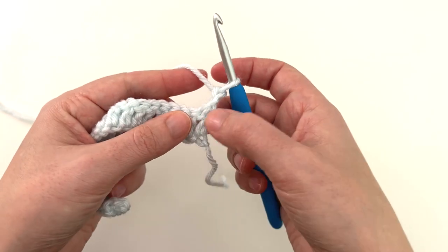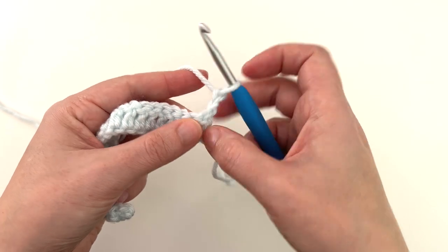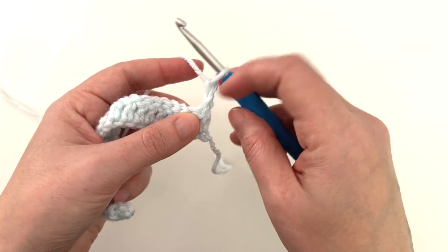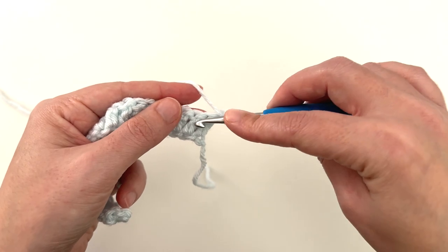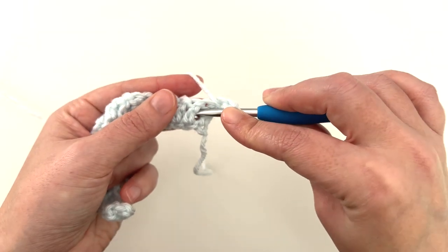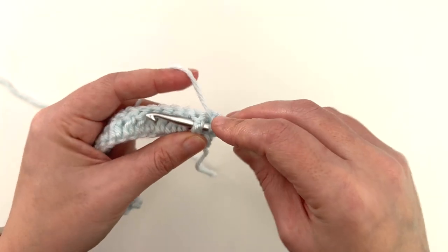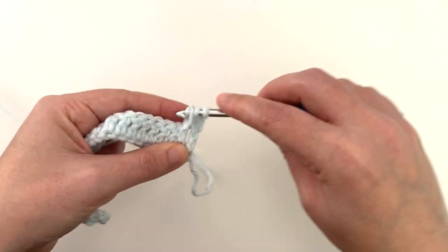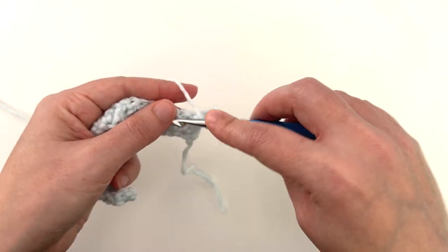So to get started we're going to ignore this stitch here because this one counts. So front post, insert your hook around the back side of the stitch and complete as usual.